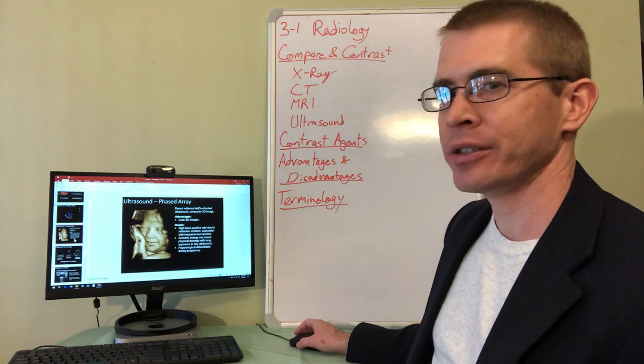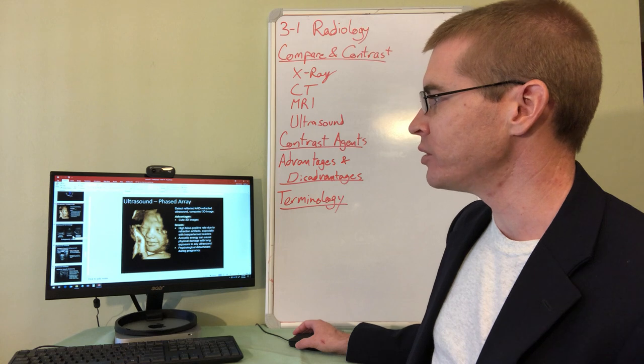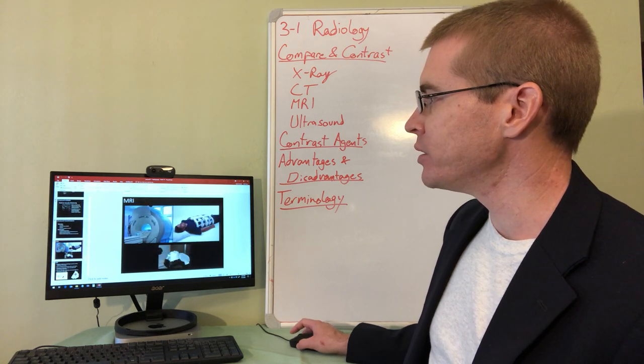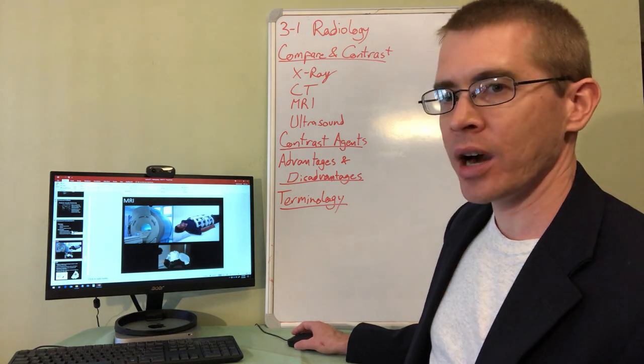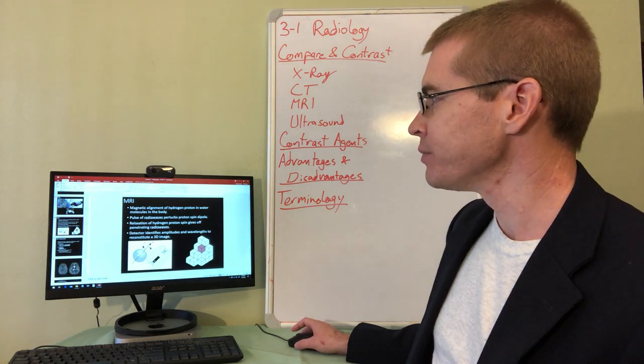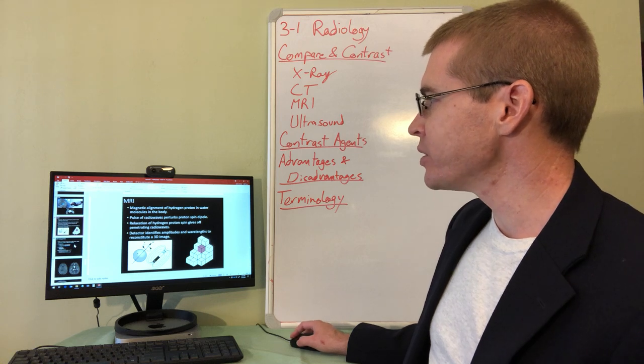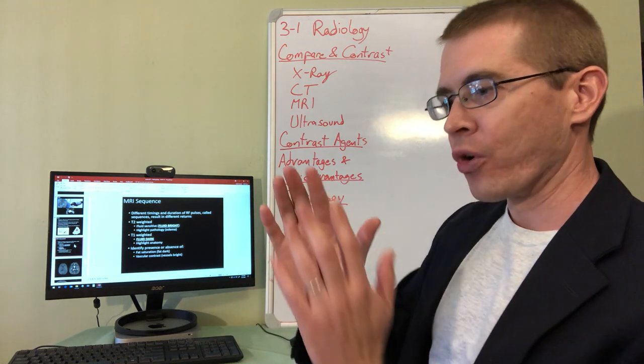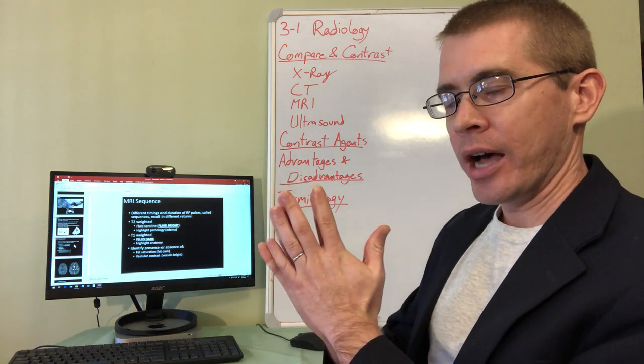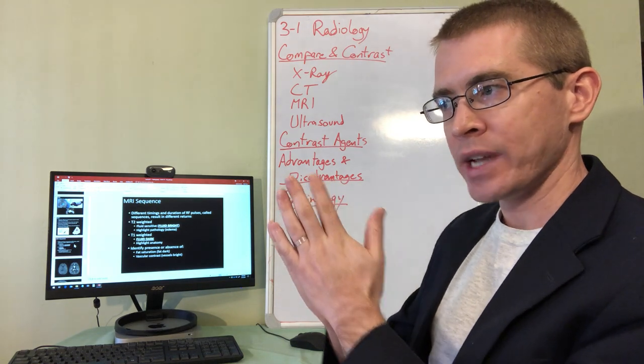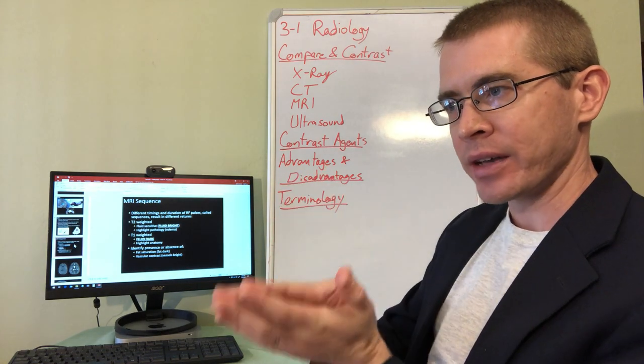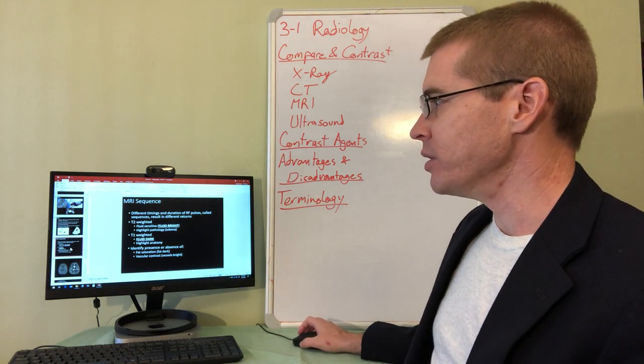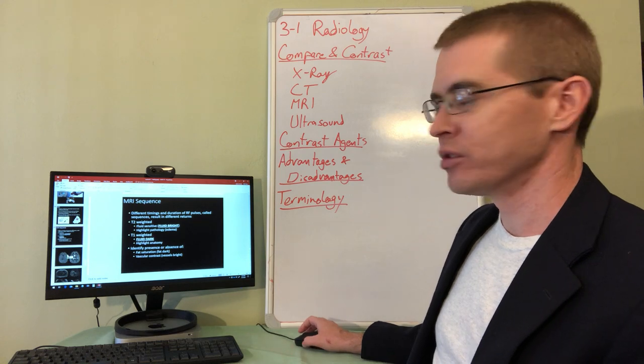And then moving into MRI and the pros and cons of MRIs. So MRIs basically use strong magnets to orient the hydrogen atoms in water molecules. And as those hydrogen atoms relax, they emit energy in the form of radio waves. And so the MRI detects these radio waves.